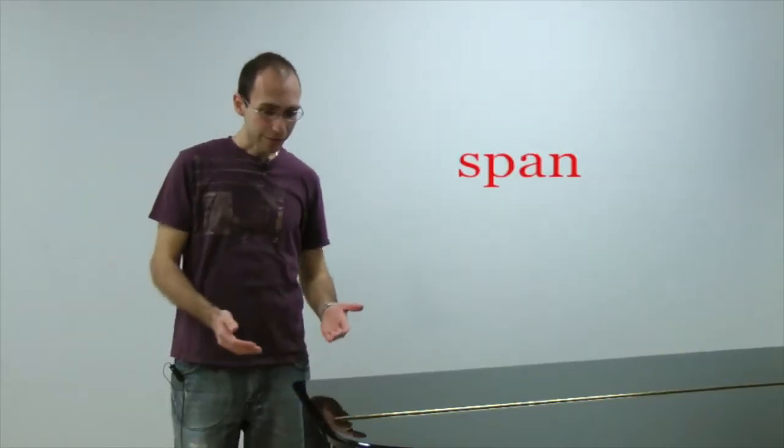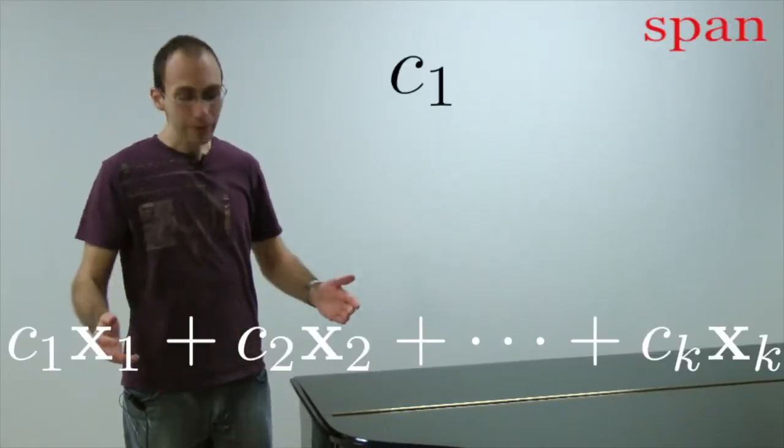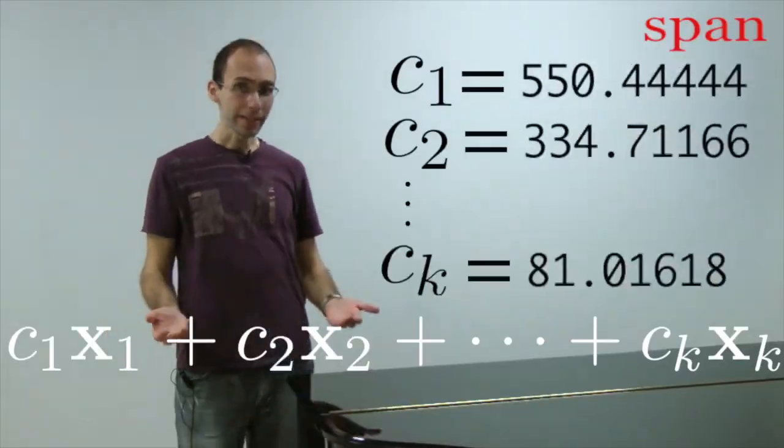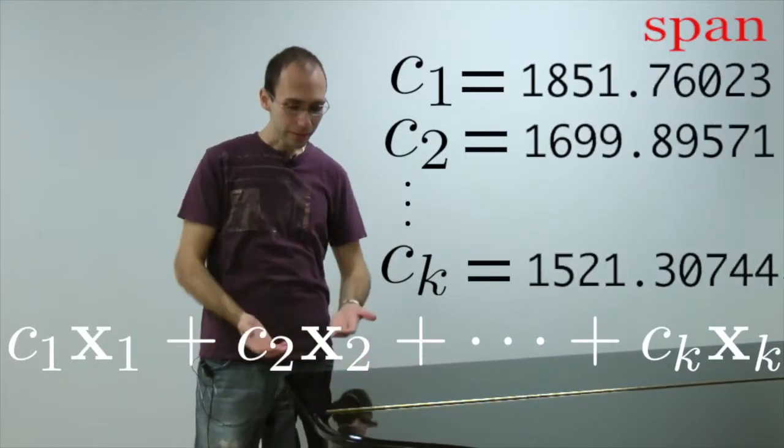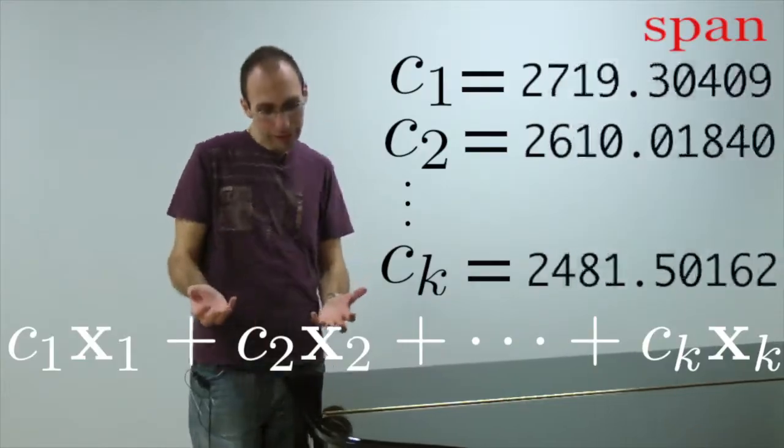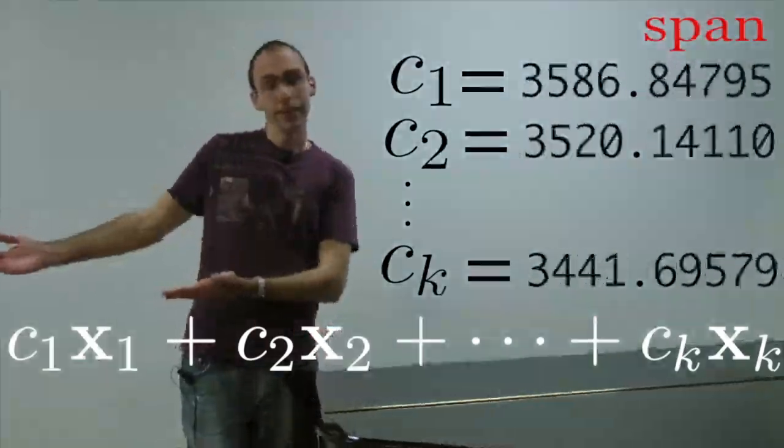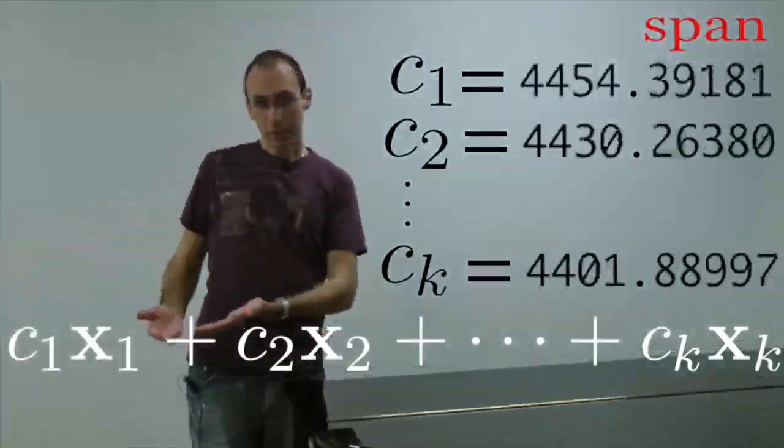The span of a set of k vectors is all the possible things you can obtain by taking linear combinations. So it's the set of all possible vectors in ℝⁿ that are written as linear combinations of x₁ up through xₖ.